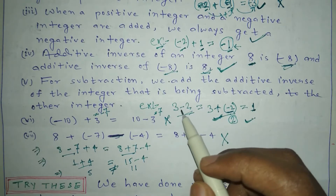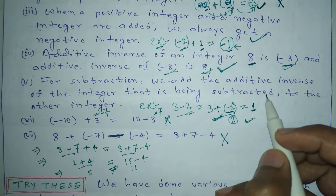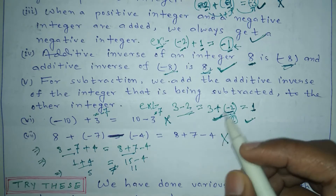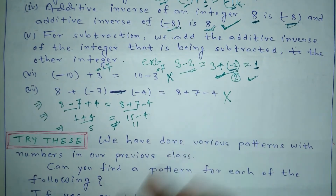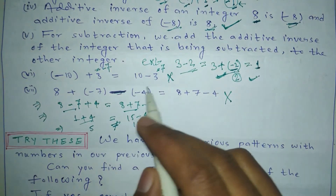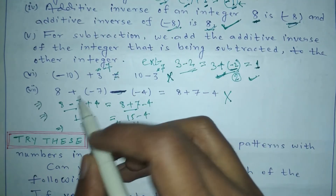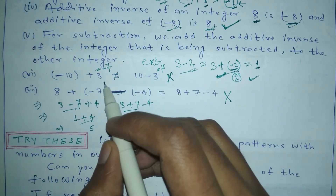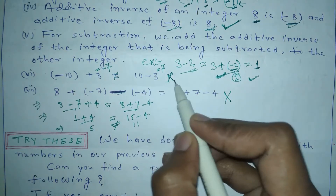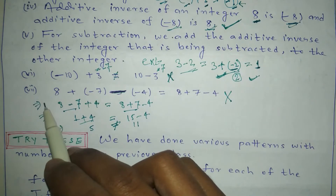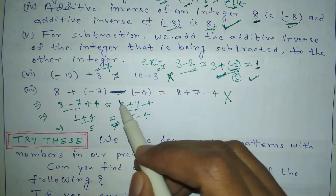In the subtraction case, we always add the additive inverse of the integer we want to subtract. The next point states that minus 10 plus 3 equals 10 minus 3. This is not equal because minus 10 plus 3 gives us minus 7, while 10 minus 3 gives us 7, so this point is wrong.